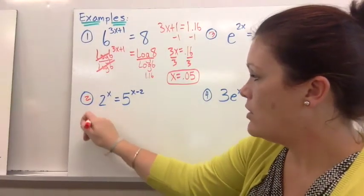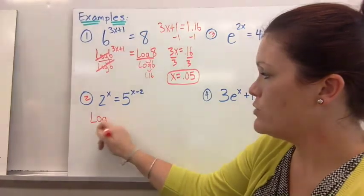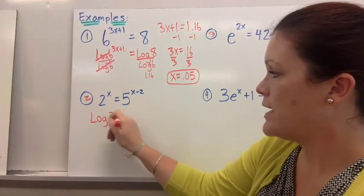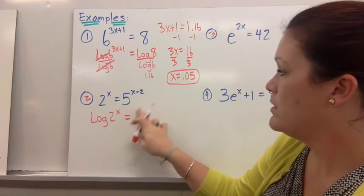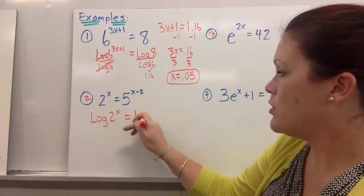Let's write log on both sides. Again we're doing this because our variables are in the exponent place and there's no other way to help them get out of the exponent. But we're using log.